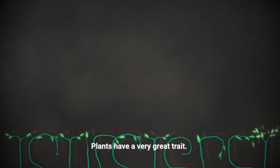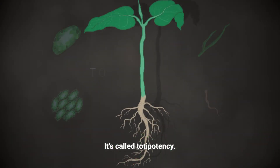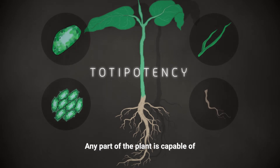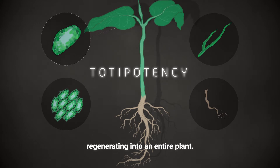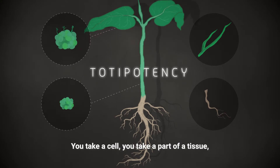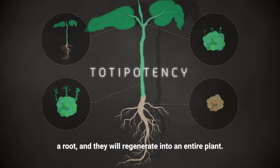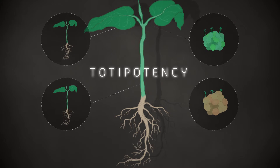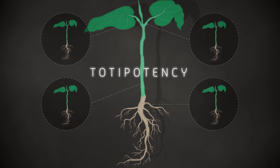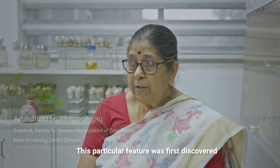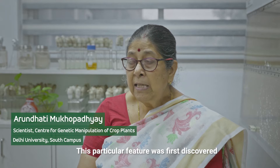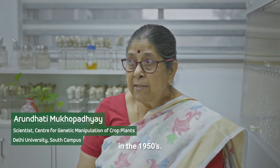Plants have a very great trait called totipotency. Any part of the plant is capable of regenerating into an entire plant. You take a cell, you take a part of a tissue, a root, and they will regenerate into an entire plant. This particular feature was first discovered in the 1950s.